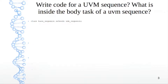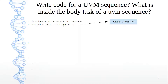You have your class, which we are calling base_sequence, and it extends from UVM sequence — that's a user-selected name. Then you have your registration mechanism, which is the UVM_OBJECT_UTILS macro. Again, base_sequence — this name corresponds to the name of the class. That's how you register it with the factory. Then you declare the p_sequencer, which is the user-defined sequencer that replaces the default sequencer.